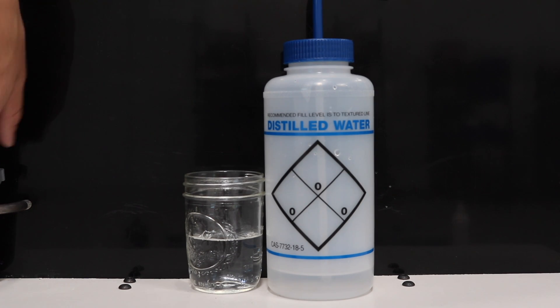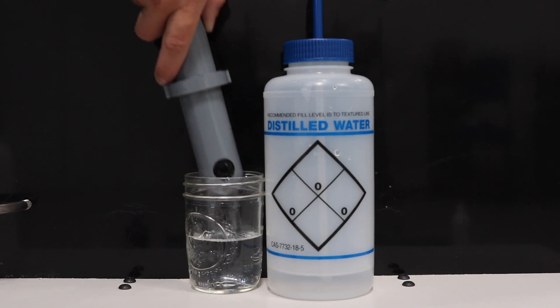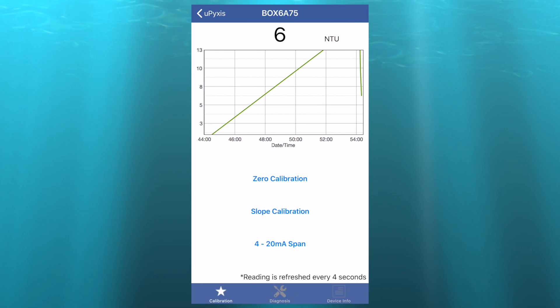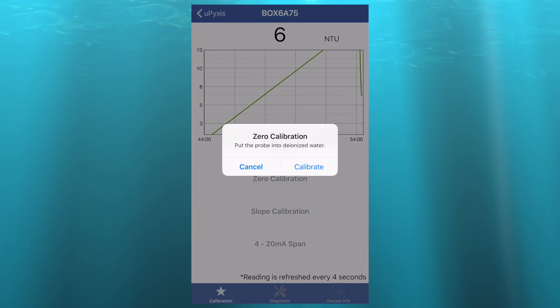To begin the calibration process, place the probe into DI water. Then on the uPixis app, select the ST730, then select Zero Calibration and Calibrate.